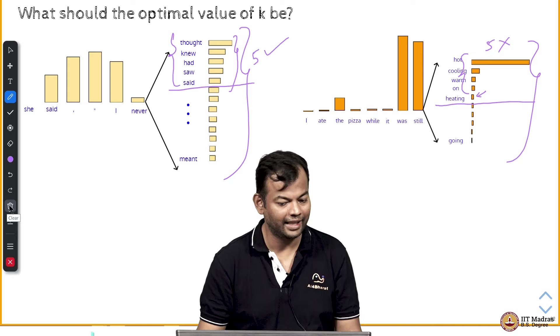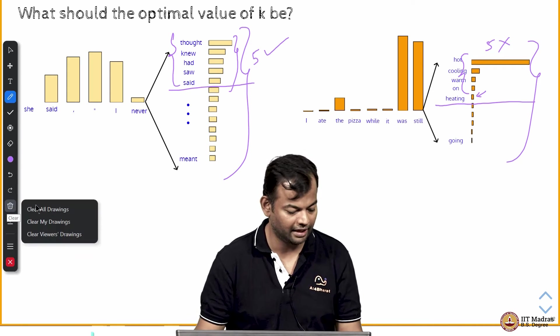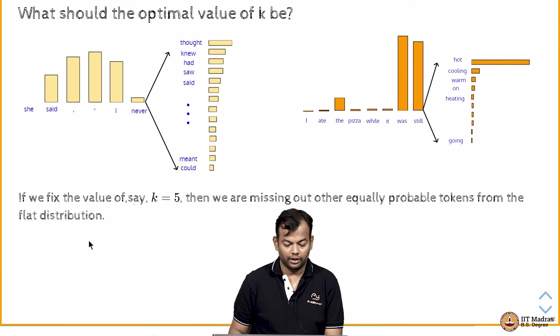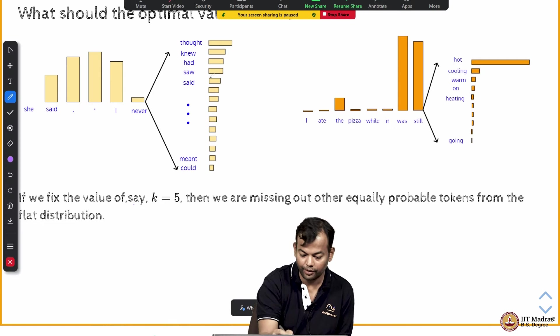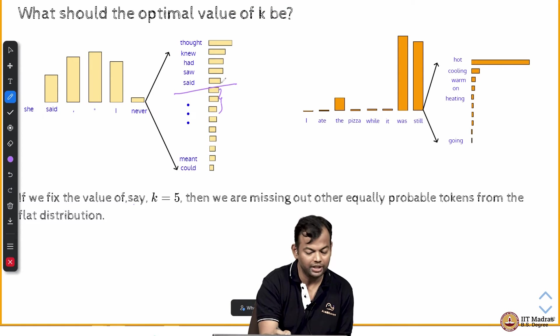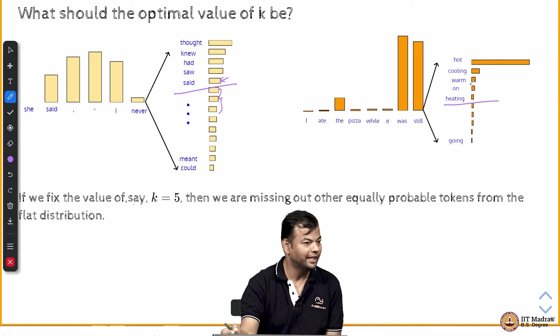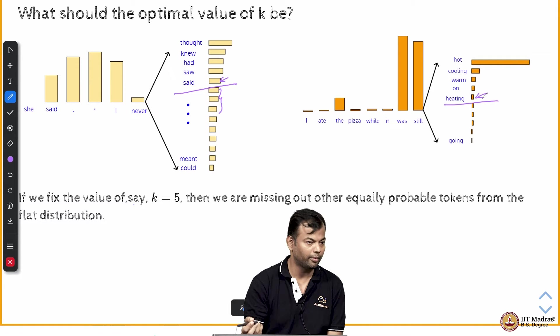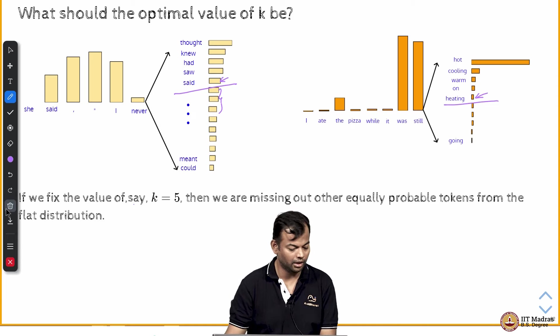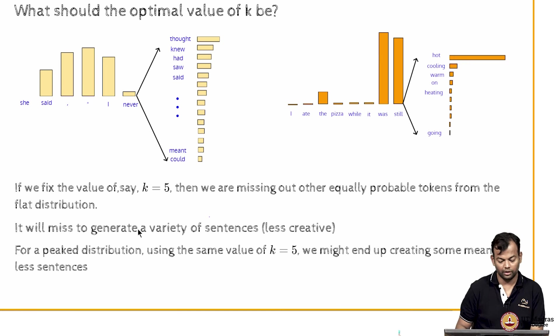So now, how do we choose the value of K and that will lead us to another decoding strategy, but let me just delve on this a bit more. If you fix the value of K equal to 5 here, then there were a few other tokens which also looked like they had the same probability, right, as the fifth token and we are missing out on this. Whereas in this case we are already in trouble because our fifth guy itself looks like a very low probability token. So that is the distinction being highlighted here. If it is a peaky distribution, we might end up creating meaningless sentences because the fifth token may be a very low probability token and hence lead to meaningless sentences. So, now what is the solution, what would you do now?